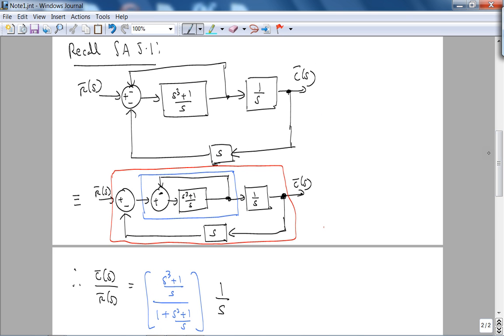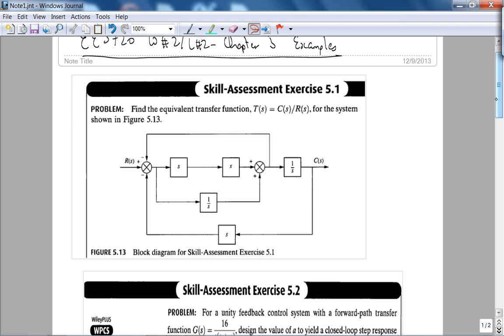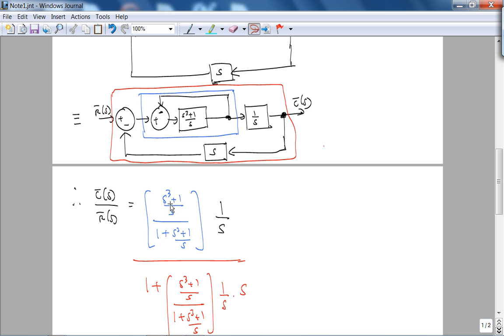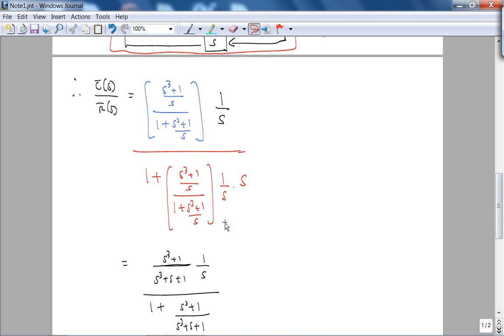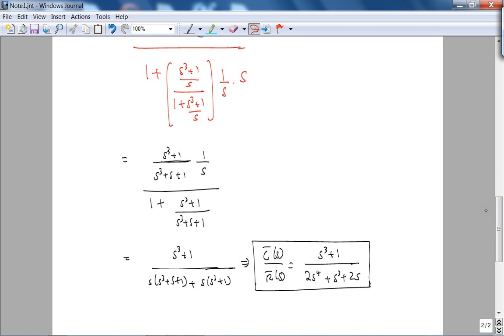So this is S squared plus 1 over S, which is what we had over there. This feedback form basically gave us S cubed plus 1 over S over S cubed plus 1 over S times 1 over S, divided by G times H. This all looks good. Just multiplying and dividing by S, I get this. Looks good so far. I can check the answer in the book, but I'm just tempted to let's just do this in MATLAB.